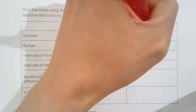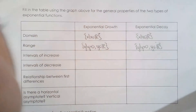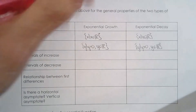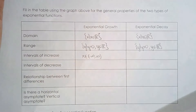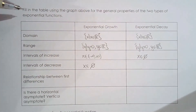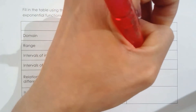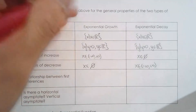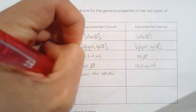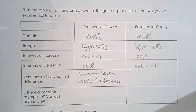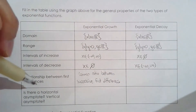Since the range is y > 0, there are no x-intercepts. For intervals of increase: exponential growth is always increasing and never decreasing. Exponential decay is never increasing and always decreasing. For the relationship between first differences, there is a common ratio between successive first differences — this is common to both exponential growth and exponential decay.